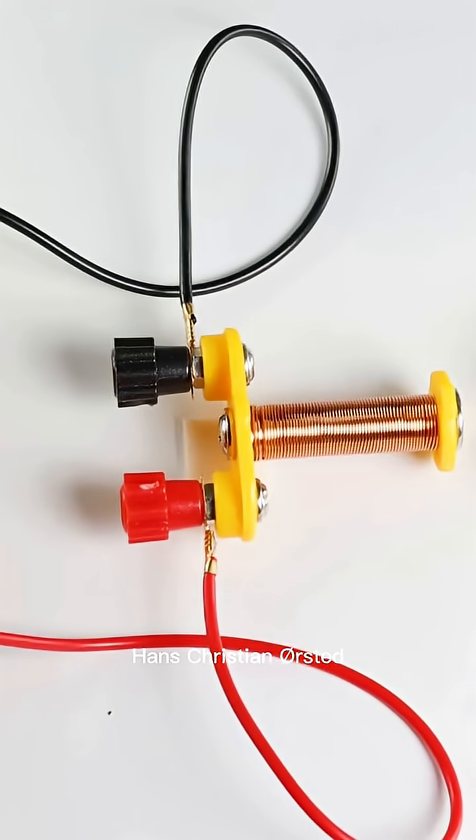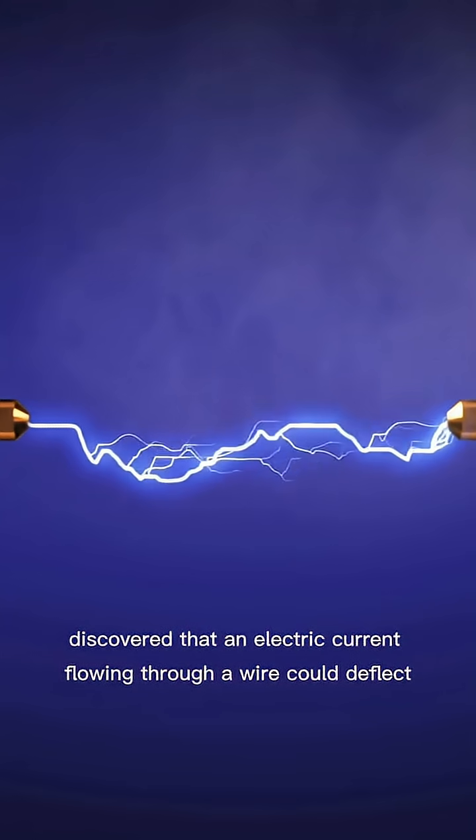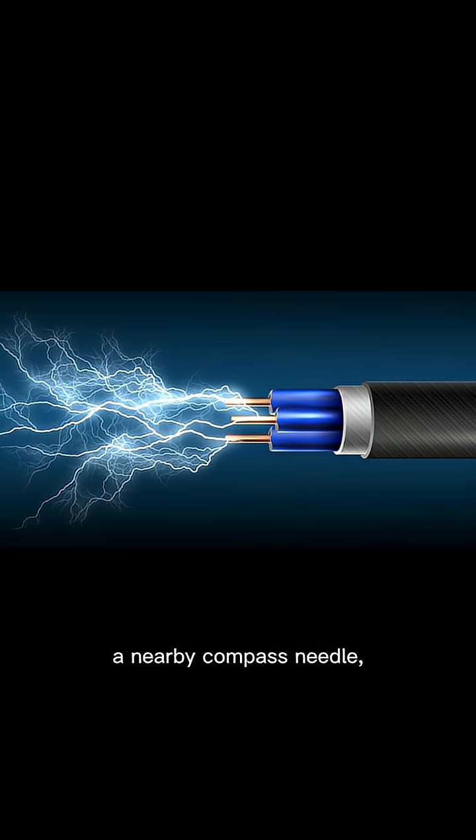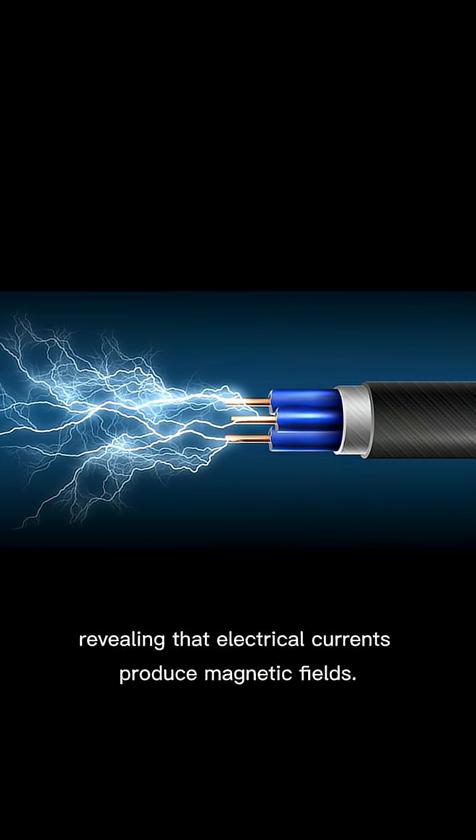In 1820, Hans Christian Ørsted discovered that an electric current flowing through a wire could deflect a nearby compass needle, revealing that electrical currents produce magnetic fields.